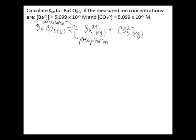Ksp is always products over reactants. So in this case, Ksp will equal the concentration of the products, which is barium ion concentration multiplied by the carbonate ion concentration.